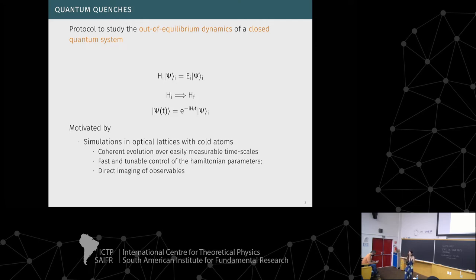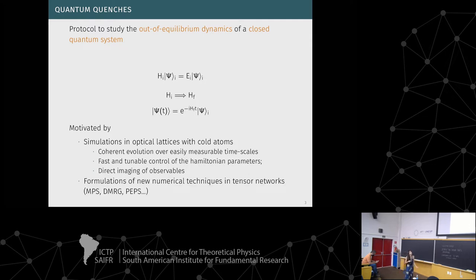In this experimental framework, the system can be well isolated from the environment so it evolves without loss of coherence for long times, and the system parameters are highly tunable in these optical lattices, which helps us study this emulating quantum quench. Numerically, quantum quenches can be studied through tensor network techniques, and in this work we have used a time-dependent density matrix renormalization group in the formalism of matrix product states.